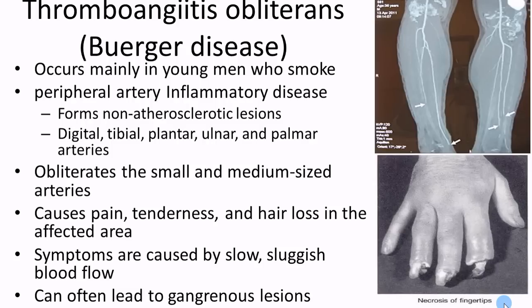Another type is thromboangiitis obliterans. The name tells you everything: thrombus and stenosis, angitis meaning inflammation of the blood vessels, and obliterans meaning obliterating or destroying them. You can see blood vessels nearly come to a complete stop at the damage site. Primarily younger male smokers are affected — testosterone and smoking chemicals both tend to vasoconstrict. Such powerful vasoconstriction cuts off blood flow to fingers and toes, destroying small and medium vessels, mostly visible in the hands but also the feet. Symptoms include achiness, tenderness, and pain. Tissue can die and gangrene can form — one more reason not to smoke.